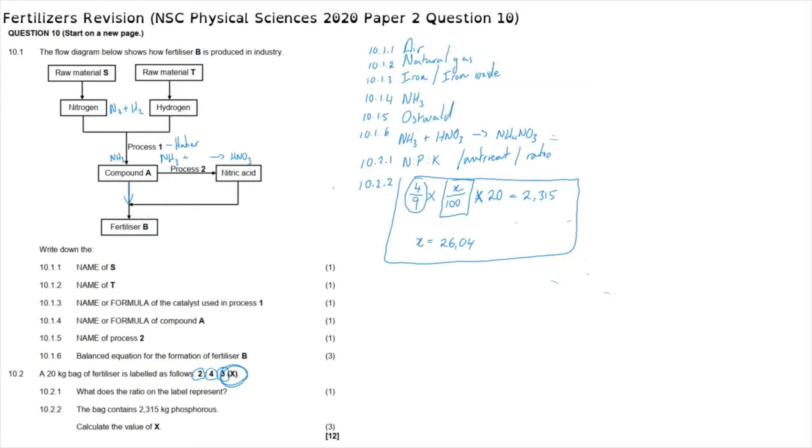When marked according to the marking guidelines, this is fairly straightforward. As this is mainly a theoretical section, we know that nitrogen is obtained from the air, hydrogen is obtained from natural gas, the catalyst required for the Haber process is either iron or iron oxide, and the Haber process produces ammonia. We use the Ostwald process with ammonia to produce nitric acid, and we have a balanced equation for that Ostwald process. There's one mark for the reactants, one for the product, one for correctly balancing it. The NPK ratio or the ratio of primary nutrients gave us one mark there. Finally, a mark for showing we understand that this fertilizer is four out of nine parts phosphorus, another mark for showing that the product of that value X as a percentage and the mass of the bag of fertilizer gives you the actual amount of fertilizer, and the third mark for getting that correct value for X.